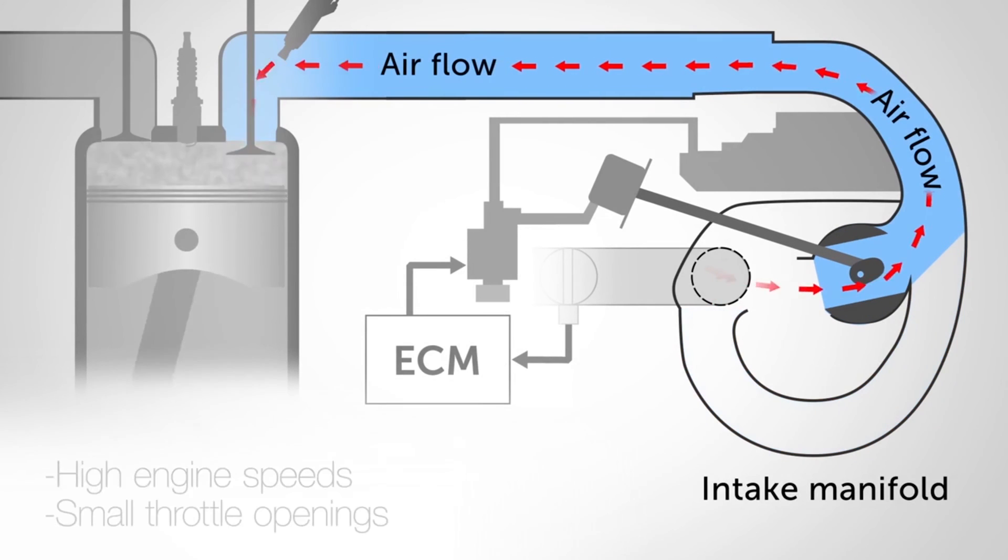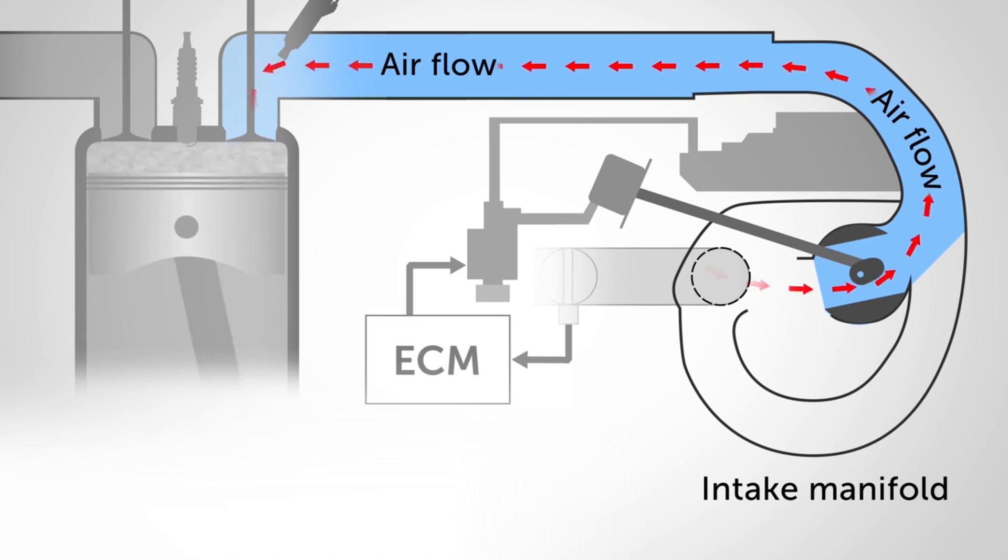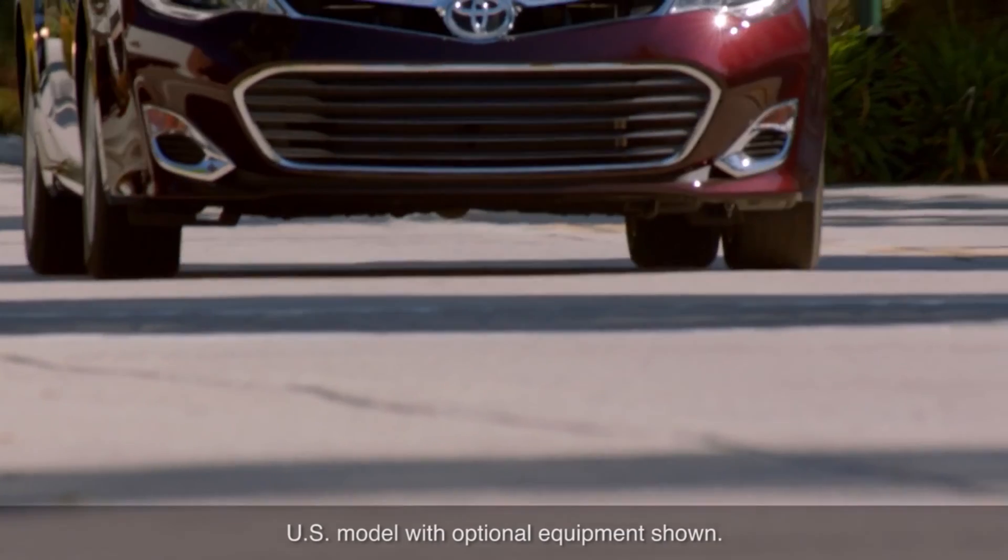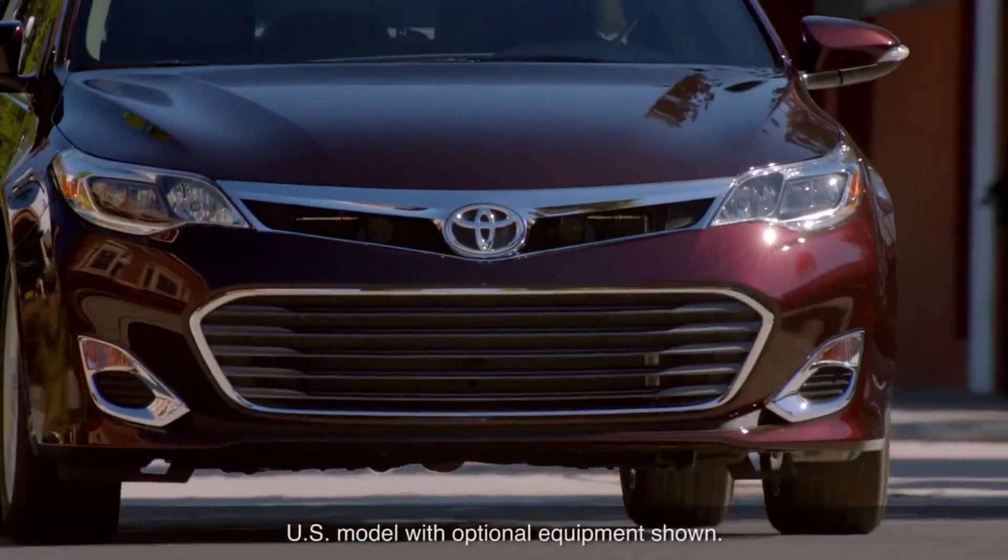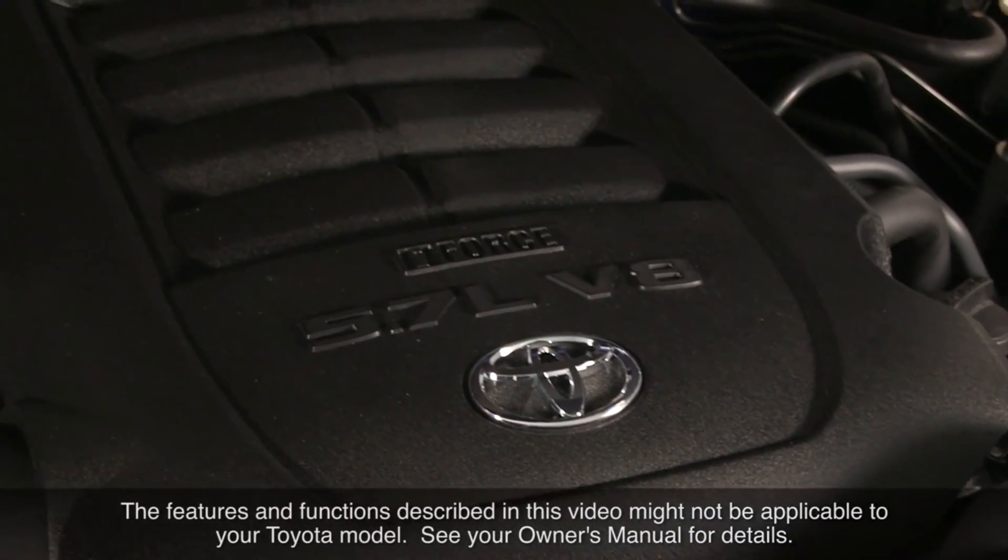When the valve is opened, at higher engine speeds and during small throttle openings, it provides a short airflow path. The resulting pulse of intake air increases the amount of air-fuel mixture entering the combustion chamber, helping increase power. This would take effect during normal gradual acceleration and at higher engine speeds.